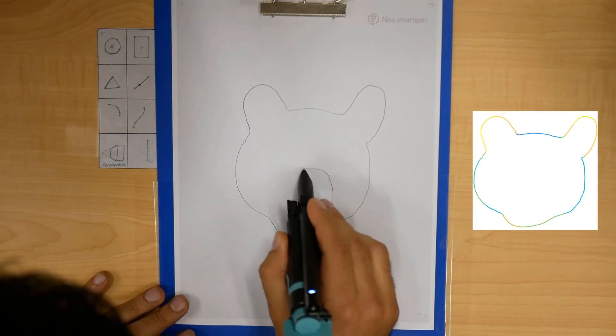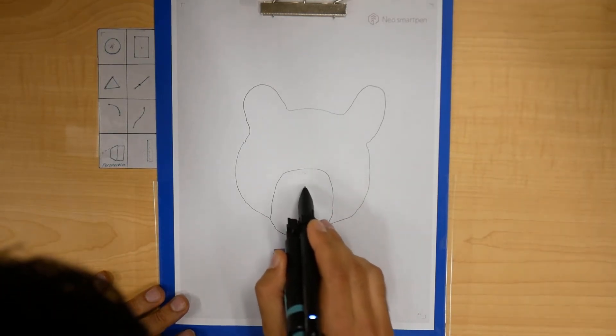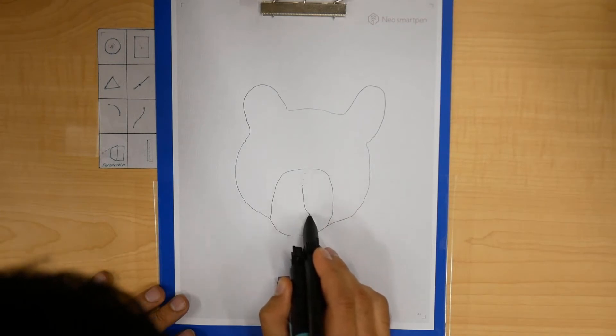On the right, you can see the pressure profile recorded by the pen for the outline. The artist here can finish their drawing using traditional freehand sketching.